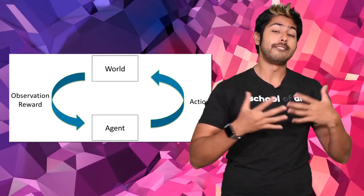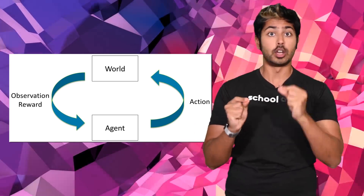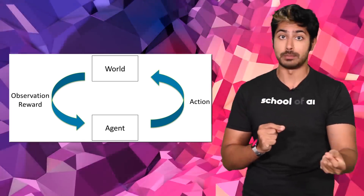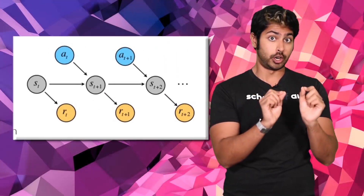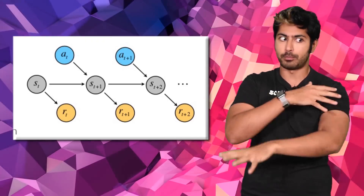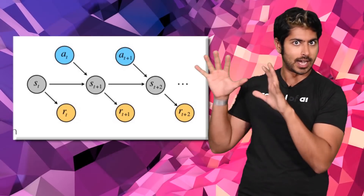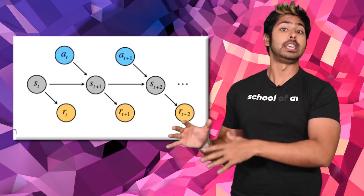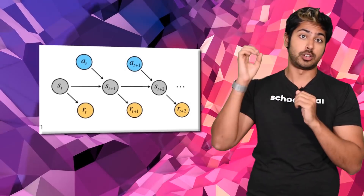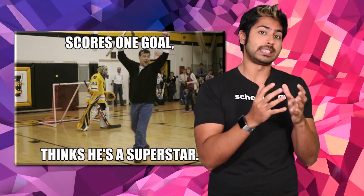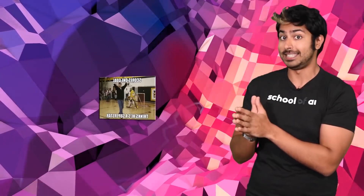We know that reinforcement learning is the subfield of machine learning that focuses on goal-oriented algorithms that involve time-delayed labels called rewards. We've also learned that the standard way to represent the problem of an AI trying to maximize its rewards in a time-based environment is by using the mathematical framework known as a Markov decision process. Now let's use these concepts to frame our problem of betting on the winning hockey team.